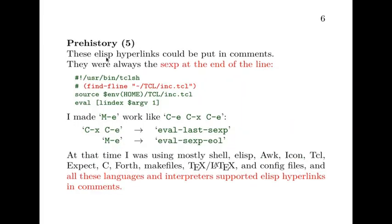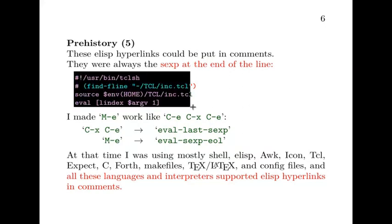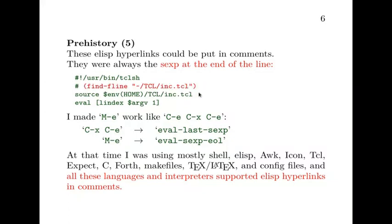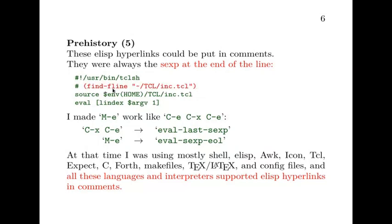The elisp hyperlinks that I was using could always be put in comments in scripting languages — they were always at the end of the line. For example, this small Tcl script has a comment line, and this s-expression is treated by Tcl as a comment. But in Emacs we can put the cursor there, type ctrl-e to go to the end of the line, and then ctrl-x ctrl-e to execute it, and this visits the file mentioned in the line below.